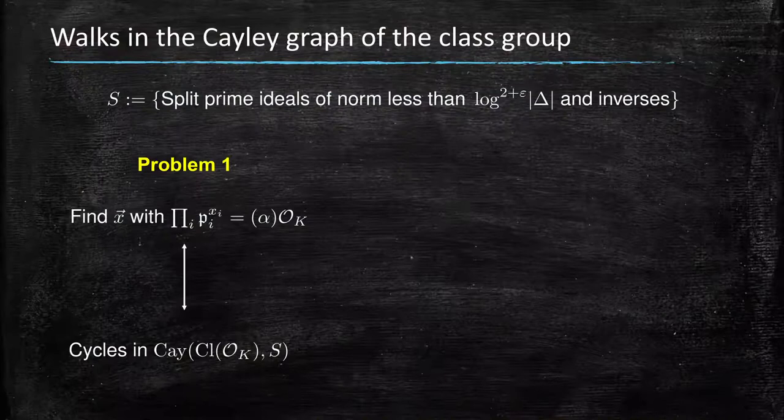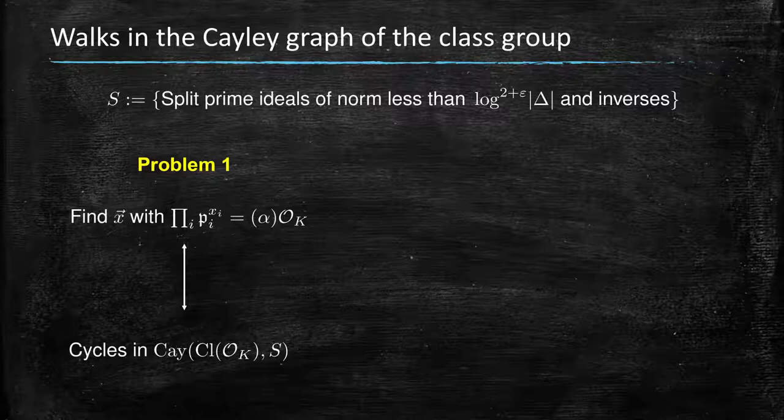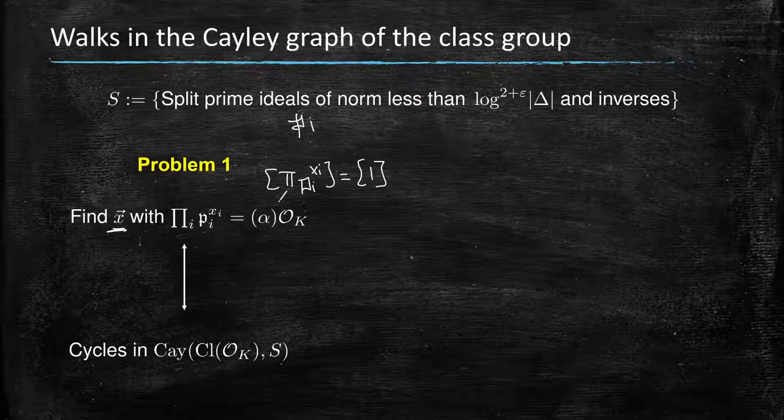Now, what are the interesting problems? First, one of the computational problems we're interested in when it comes to class groups is finding relations between the generators. Finding vectors x such that the product of the pi to the xi—the split prime ideals p1, p2 until pk—are equal to a principal ideal. So this is a neutral element in terms of ideal classes. The search for such vectors is really connected to the calculation of the structure of the class group. Finding those vectors is the same as finding cycles in the Cayley graph of the class group.